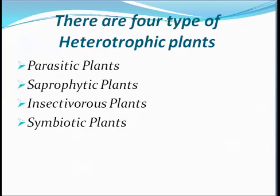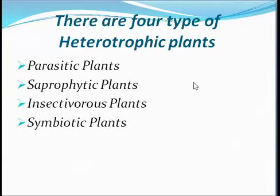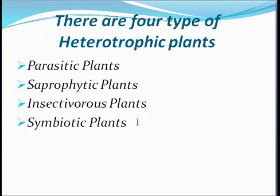There are four types of heterotrophic nutrition: parasitic plants, saprophytic plants, insectivorous plants, and symbiotic plants. All four types are heterotrophic, meaning they cannot prepare their own food. However, parasitic plants and saprophytic plants are fully heterotrophic, while insectivorous and symbiotic plants are not fully heterotrophic — they prepare some of their own food but retrieve part of their nutrition from other sources.